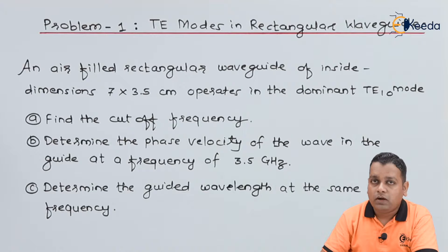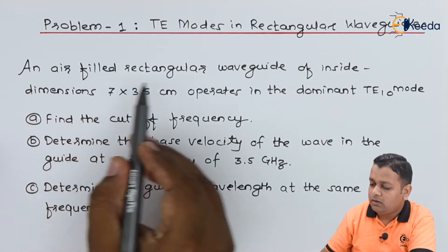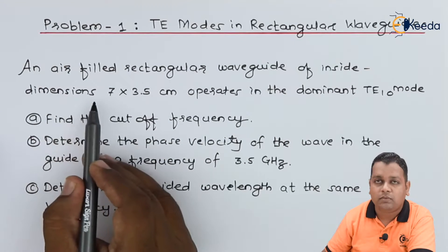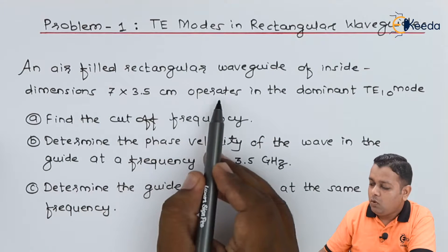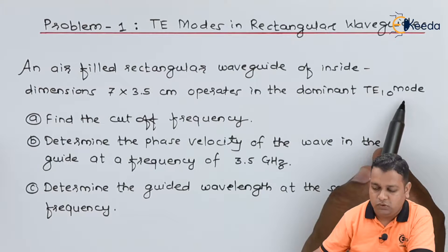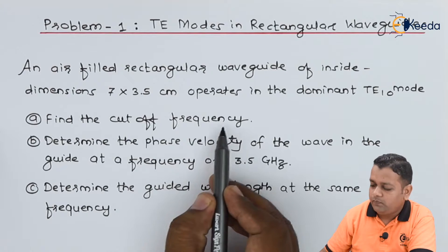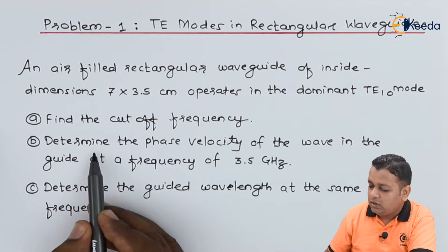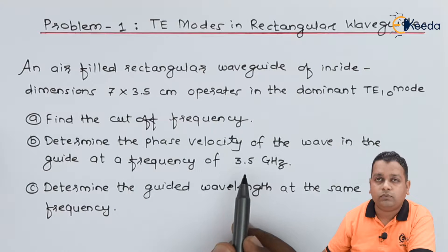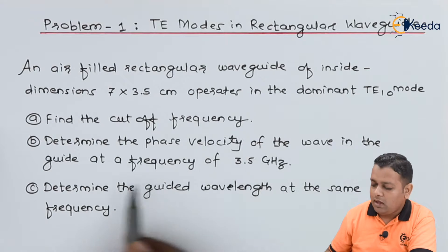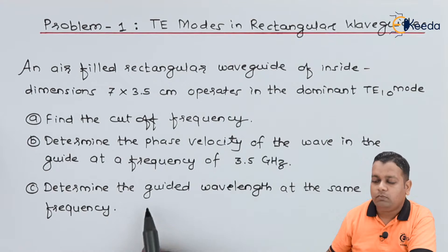Here we are provided with a problem statement: an air-filled rectangular waveguide of inside dimensions 7 × 3.5 cm operates in the dominant TE10 mode. In part A, we are asked to find the cutoff frequency. In part B, to determine the phase velocity of the wave in the guide at a frequency of 3.5 GHz. And in part C, to determine the guided wavelength at the same frequency.